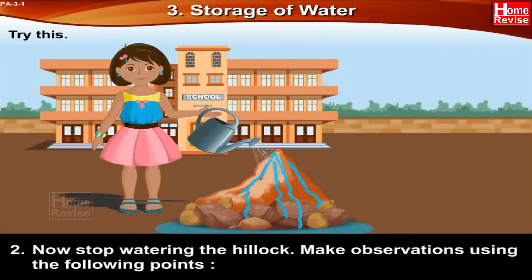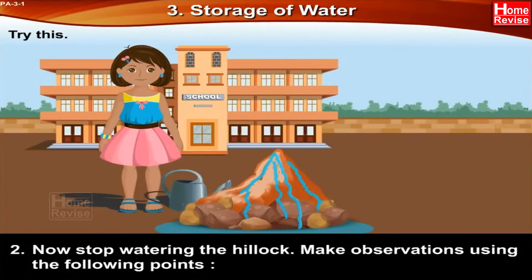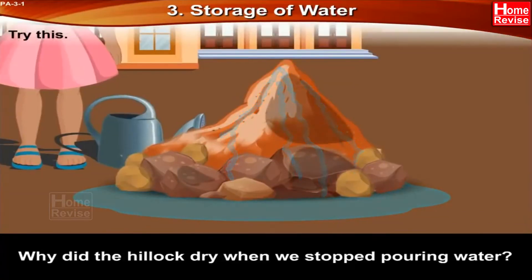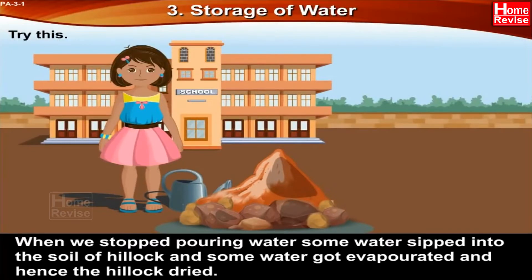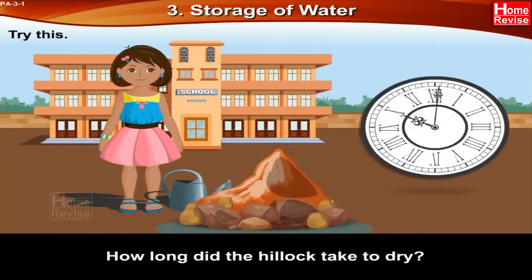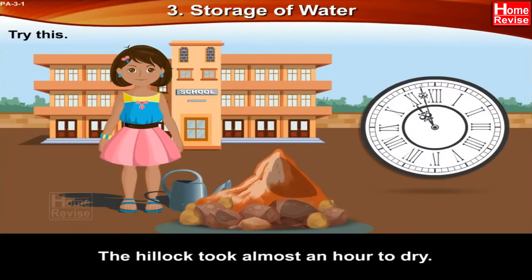Now stop watering the hillock and make observations using the following points. Why did the hillock dry when we stopped pouring water? When we stopped pouring water, some water seeped into the soil of the hillock and some water evaporated, and hence the hillock dried. The hillock took almost an hour to dry.